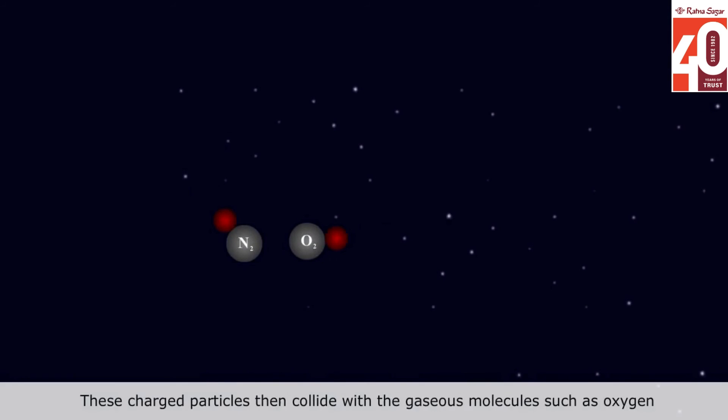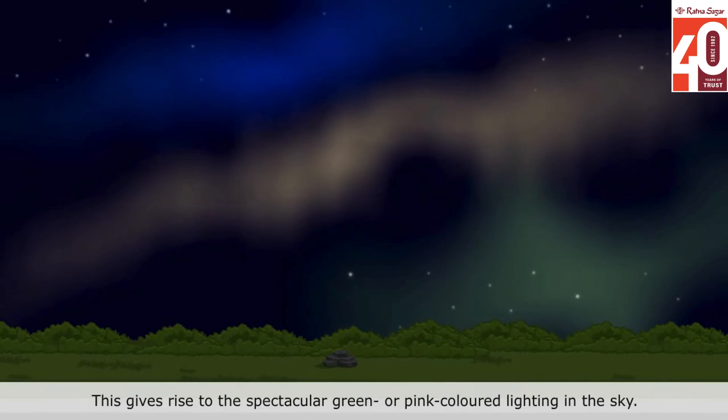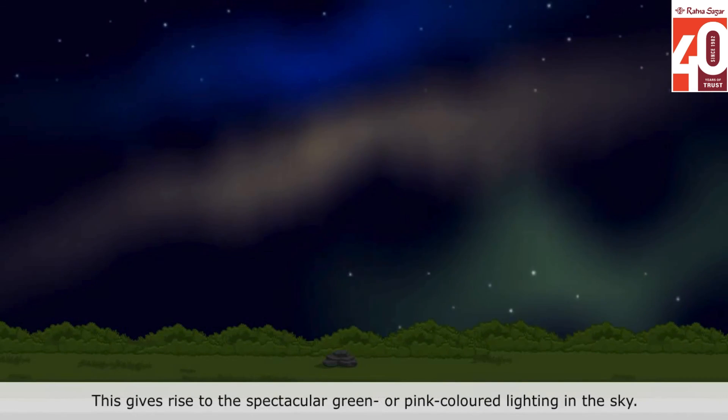These charged particles then collide with the gaseous molecules such as Oxygen and Nitrogen in the atmosphere. This gives rise to the spectacular green or pink colored lighting in the sky.